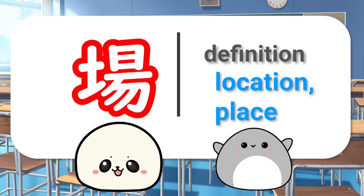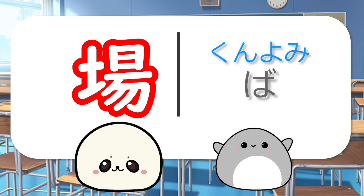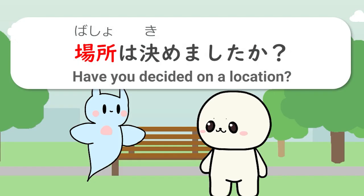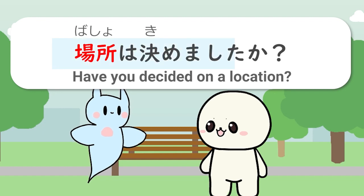The definitions of this kanji are location, place. Onyomi is jo. Kunyomi is ba. An example word is basho. Basho wa ki me ma shita ka?